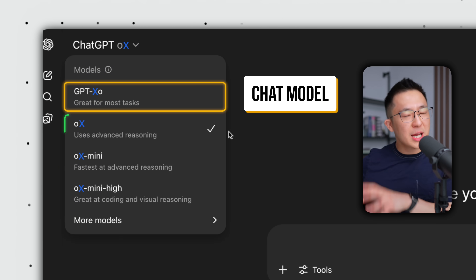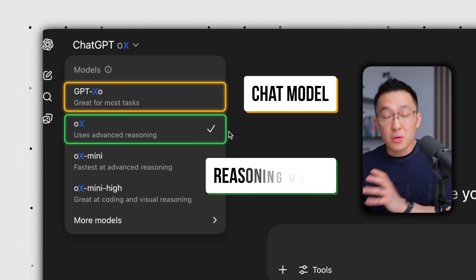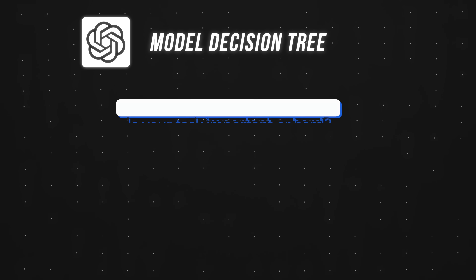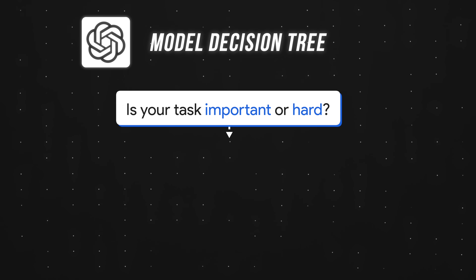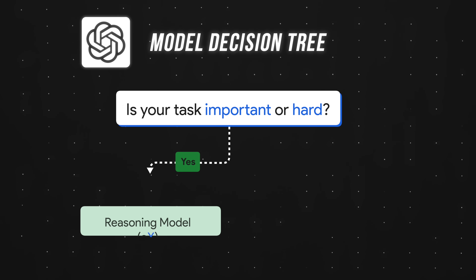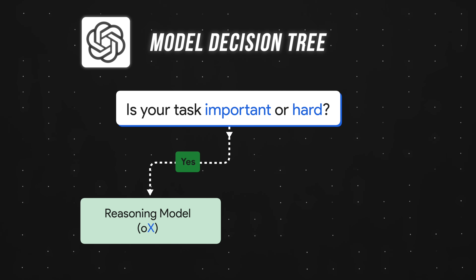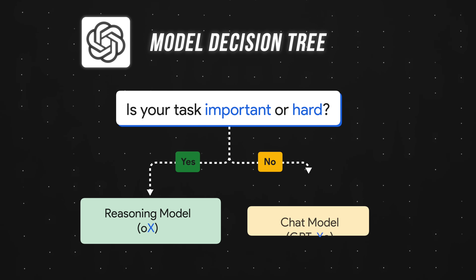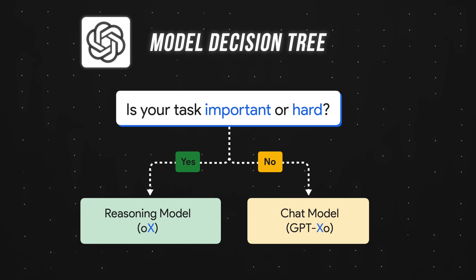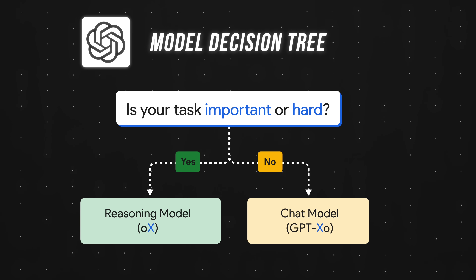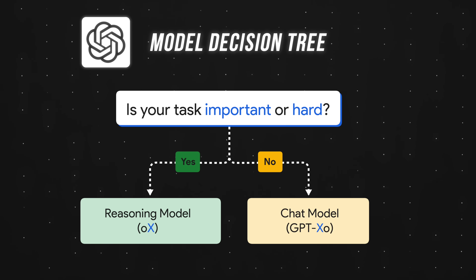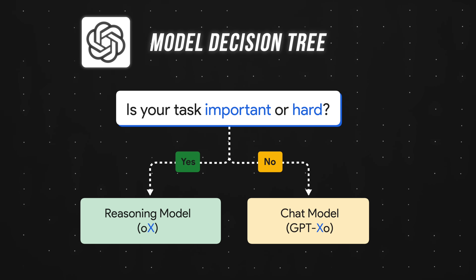The key is knowing when you need a basic chat model and when you need a reasoning model. In simple terms, reasoning models perform best when the query is important or hard and you're willing to wait a little bit for a better answer. Whereas basic chat models, denoted by GPT-number, are great for tasks that are low stakes and you want a fast response.